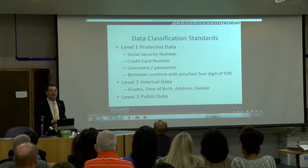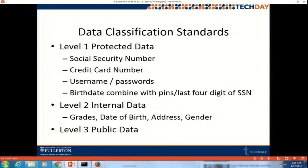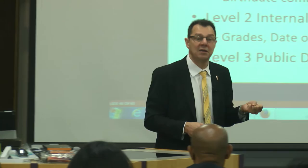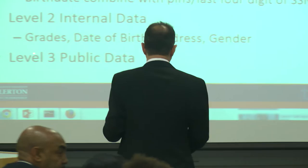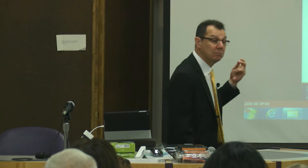We also look at data security classification. We protect Level 1 data at the highest level, Level 2 a little bit less, and Level 3 is public. Always think about what is your data classification. Data that can be exposed — like social security number, credit card number, username and password, birthday combined with SSN — are called Level 1 data. They are there to give someone financial gain from you. Remember that $450 billion is because of gaining financial gain from you. Grade, date of birth, address, and gender are Level 2 — almost everybody's address is exposed on the web.